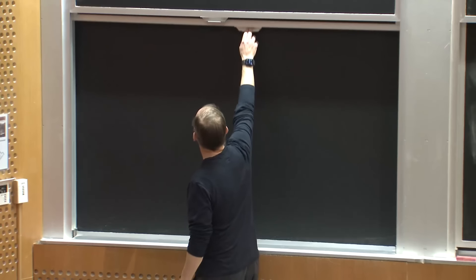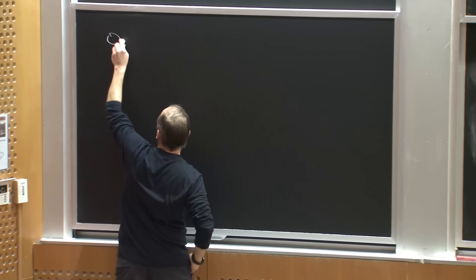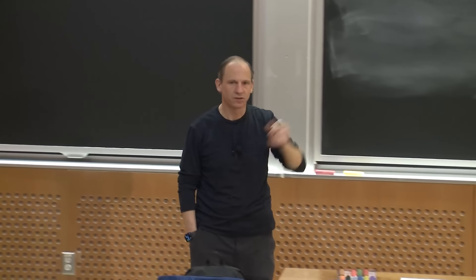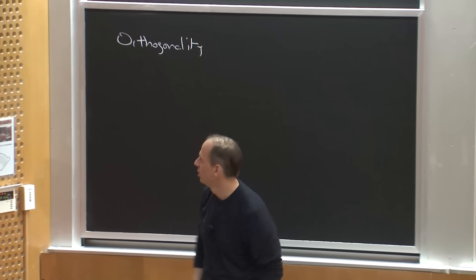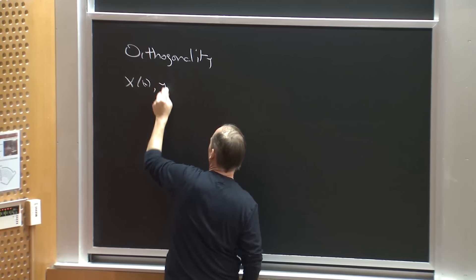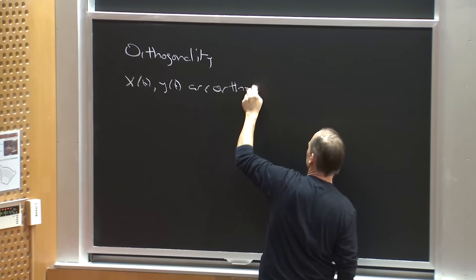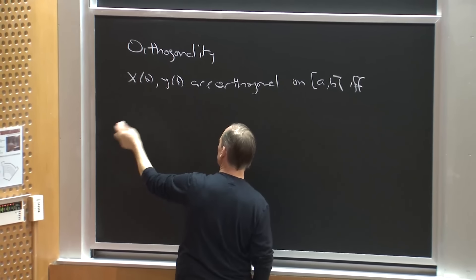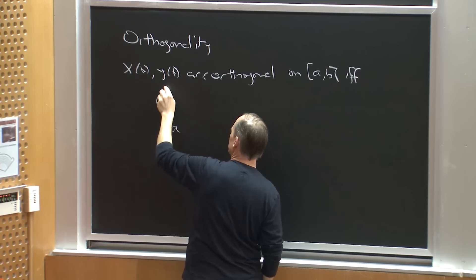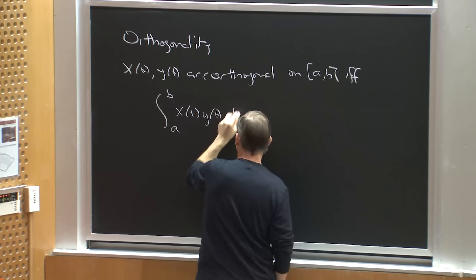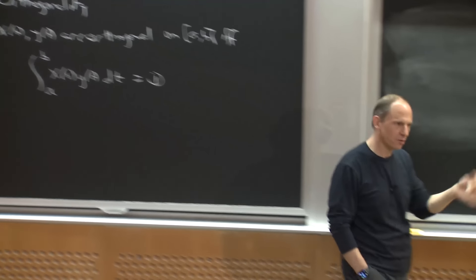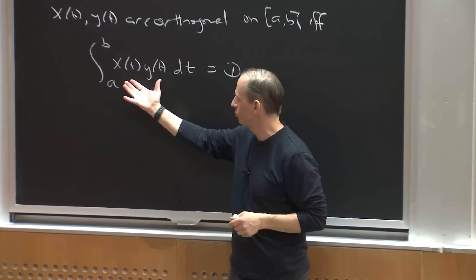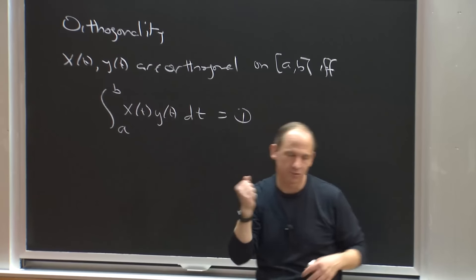The second thing I'd like to remind you of is the notion of orthogonality. It's particularly obvious what orthogonality means when you have a pair of vectors — they're perpendicular in some sense. But for continuous-time waveforms, two waveforms x(t) and y(t) are orthogonal on an interval if the integral from a to b of x(t) times y(t) dt equals zero. This is the natural extension of the inner product from discrete vectors onto continuous-time waveforms.